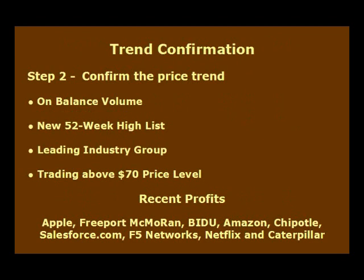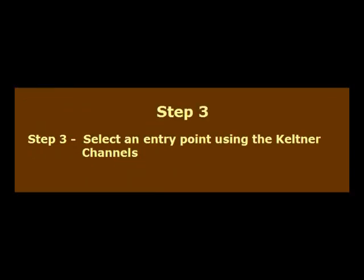I've been able to produce substantial profits using this trade selection process for stocks such as Apple, Freeport-McMoRan, Baidu, Amazon, Chipotle, Salesforce.com, F5 Networks, Netflix, and Caterpillar. The third step in our stock selection process is to use the Keltner channels to select an entry point. I covered the use of Keltner channels in my previous video, so if you'd like details on how I use the Keltner channels to enter trades, please refer to that video.